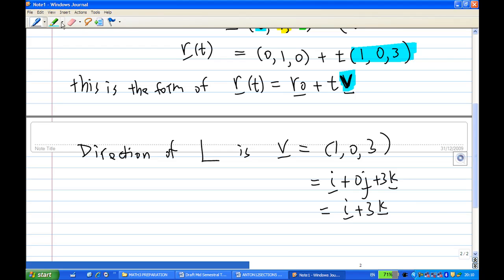And where is the point it passes through? One of the points it passes through in this case is (0, 1, 0), which is r0 here. This is one of the points; there are actually many points it passes through.